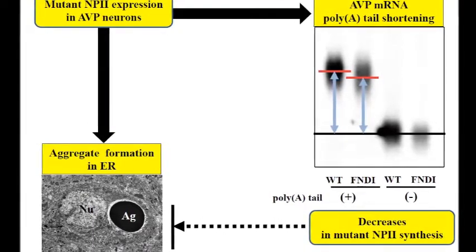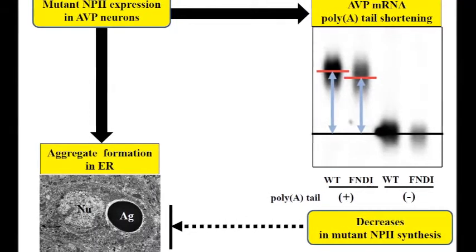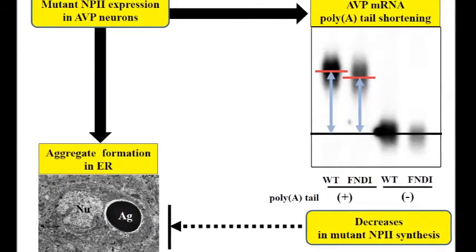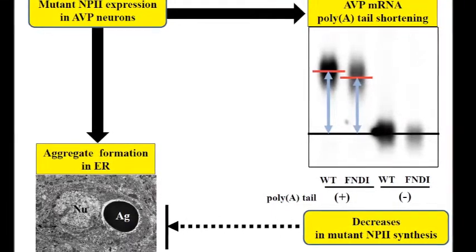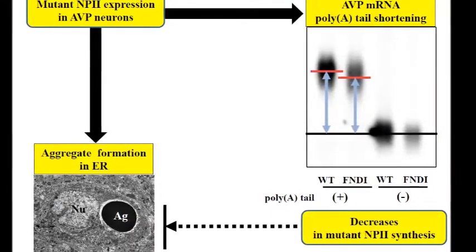Thus, progressive polyuria in FNDI mice could proceed in the absence of vasopressin neuronal cell death, in contrast to the autophagy described in a number of previous studies cited in this report.